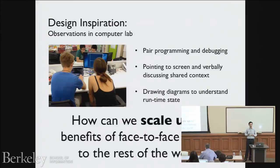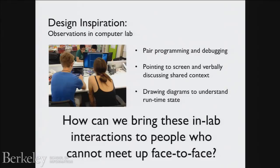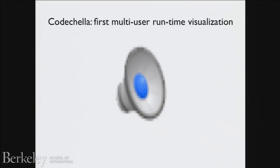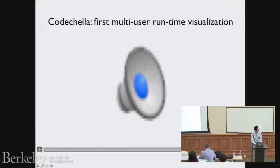How can we scale this up? In-person interactions don't scale. The question is: how can we bring these in-lab interactions to people who otherwise can't meet face to face? To investigate this, I built Coachella — the first multi-user visualization system of this sort — extending the ideas of visualizing procedural state to multiple users.